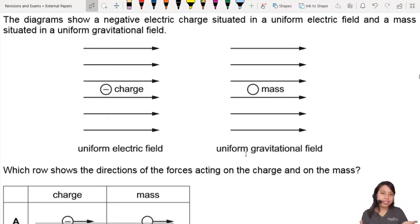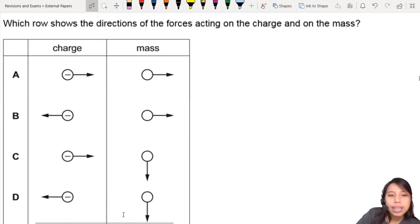Here we have two fields. We will learn more of this in A2, don't worry. But two fields, an electric field and a gravitational field. Which row shows the correct direction of the forces acting on the charge?